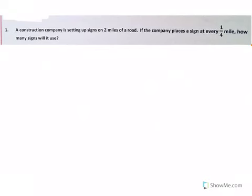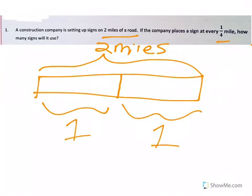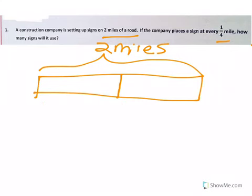Let's look at another example. Construction company is setting up signs on two miles of road. If the company places a sign at every one-fourth mile, how many signs will it use? I'm going to do another tape diagram. This time, I know that the whole thing is two miles. But what I need to do is then split this up into every fourth of a mile. Now, here's a part where it could be a little confusing. I'm not breaking that into fourths. It's not what it asks. It doesn't say a fourth of two miles. It says every fourth of a mile.